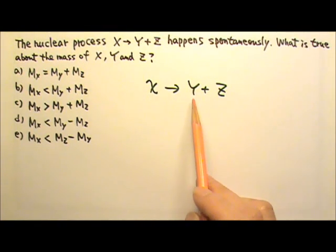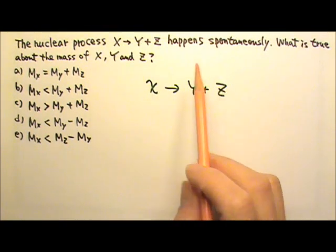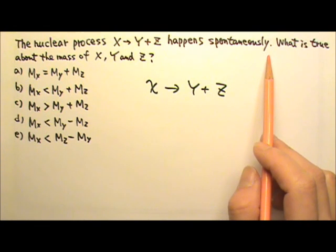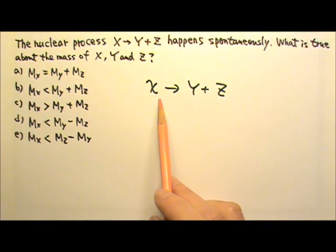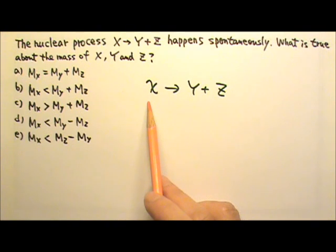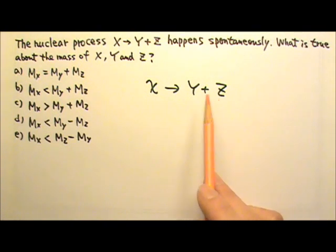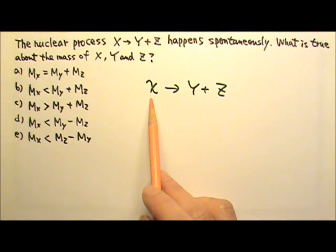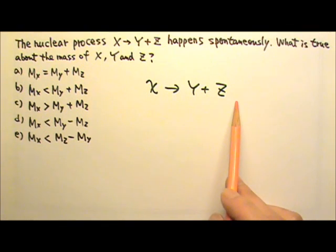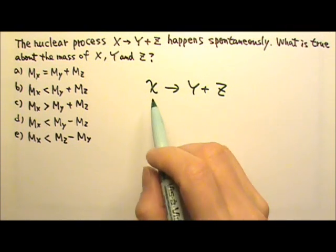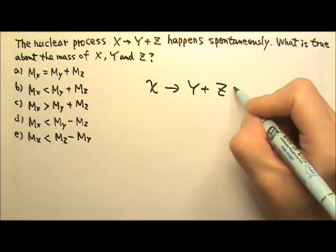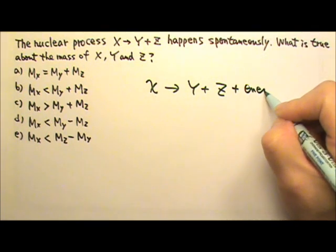Because x turning into y plus z happens spontaneously, that means it does not require any stimulus to make this happen. So when x turns into y plus z, there's no energy required to make this happen. In fact, because it is spontaneous, that means there must be energy given off.